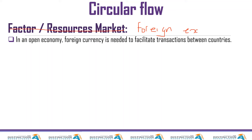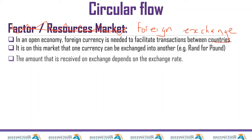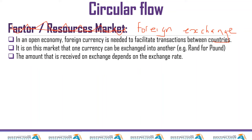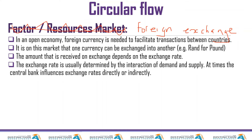The foreign exchange market is a market where one currency can be exchanged for another. This is a market where we trade rand for dollars, pounds for euro, and so on. The amount received on exchange depends on the exchange rate, and the exchange rate itself is determined by forces of demand and supply. If more people want to buy the rand, it appreciates; if many people are selling the rand, it depreciates. There are many reasons why the rand can be oversupplied or over-demanded.